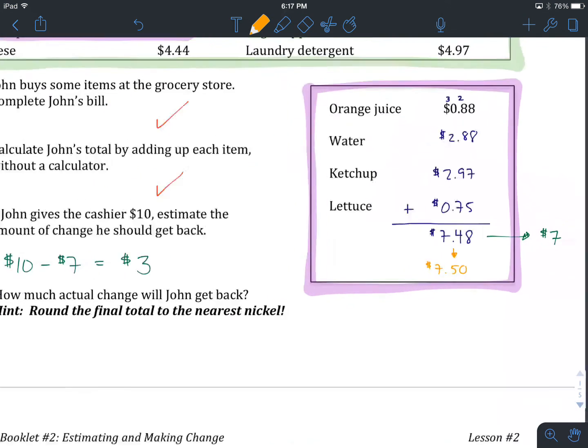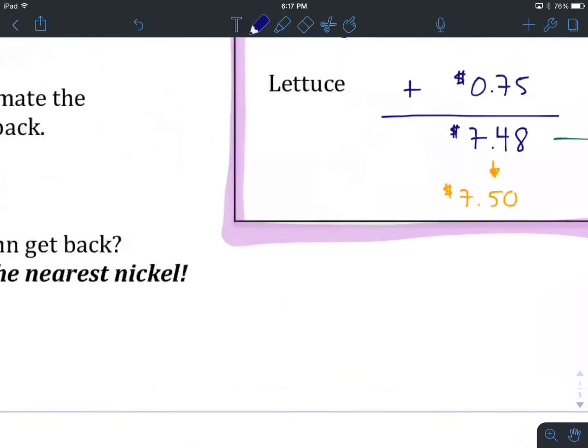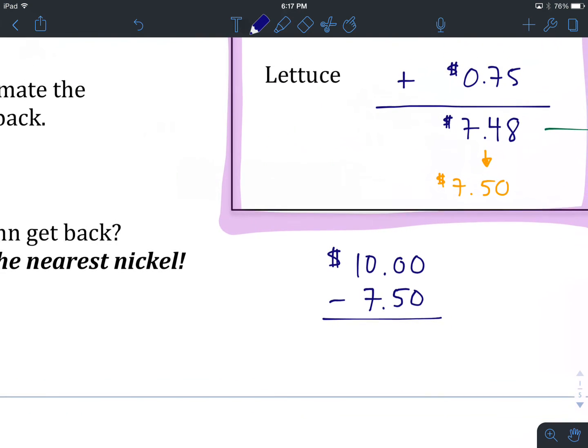If we are going to figure out how much change John actually gets back, we are going to subtract vertically. John has $10 that he gives the cashier, and we are going to subtract that $7.50 that John actually owes. At this point, I'd like you to do some vertical subtraction. So, complete this, and if you think you've got it right, come on back and we'll see how you did.